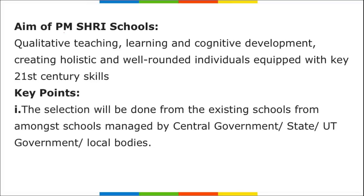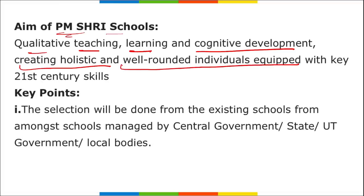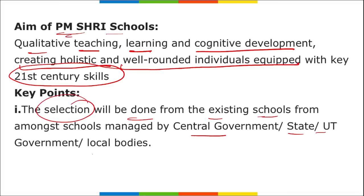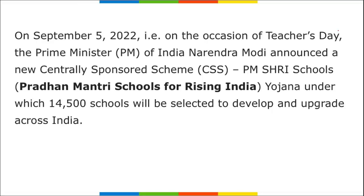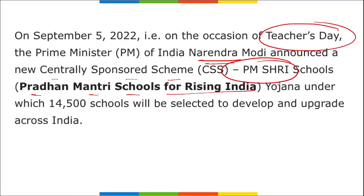The aim of PM Shri schools is quality of teaching, learning, cognitive development, and creating holistic and well-rounded individuals equipped with 21st-century skills. Selections will be done from existing schools managed by the central government, state/union territory, or local bodies. Remember: PM Shri is a centrally sponsored scheme under which 14,500 schools will be selected for development.